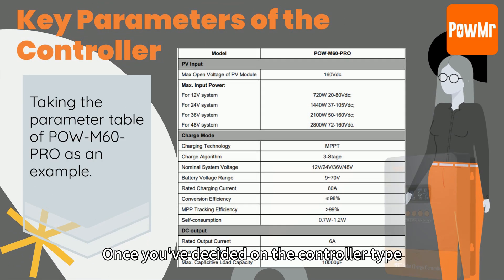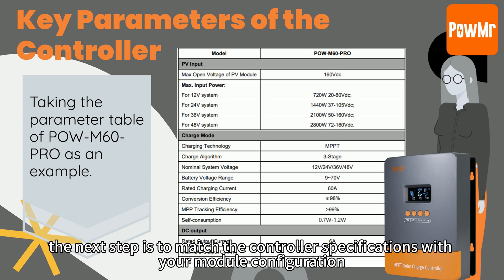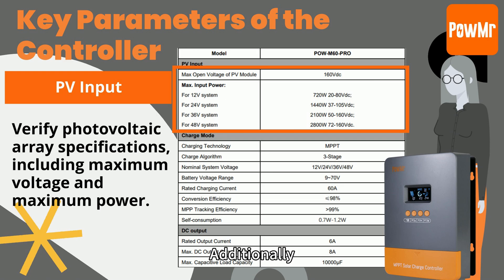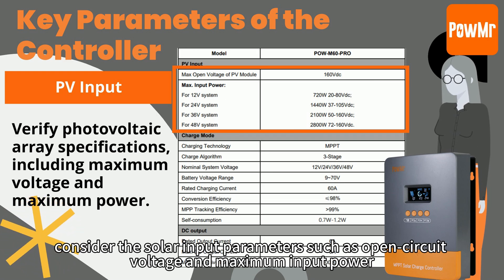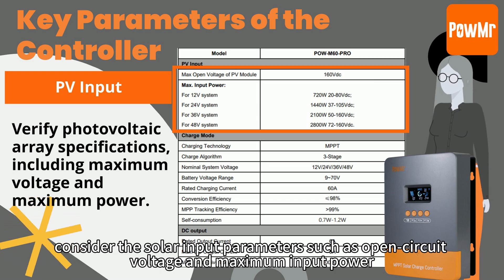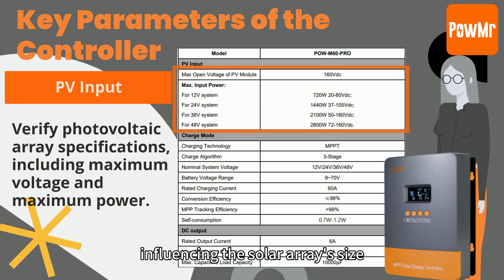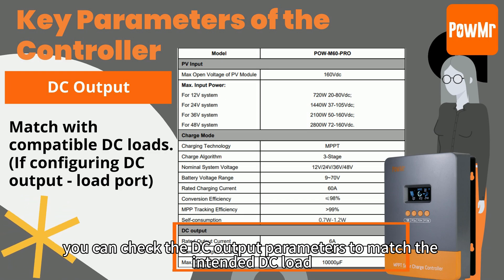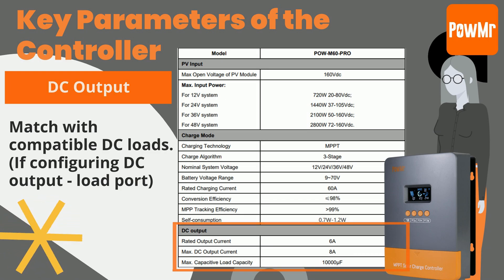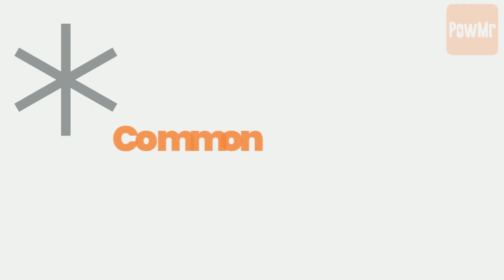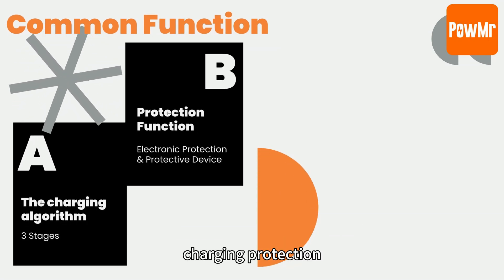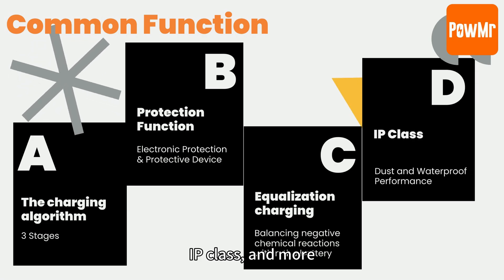Once you have decided on the controller type, the next step is to match the controller specifications based on module configuration. Begin with the system voltage and determine the battery pack's charging capacity. Additionally, consider the solar input parameters such as open circuit voltage and maximum input power, which influence the solar array size. Some solar controllers can connect to DC loads; you can check the DC output parameters to match the intended DC load. For controller charging functions, take into account charging algorithm, charging protection, equalization charging features, IP class, and more.